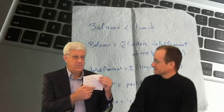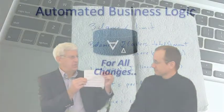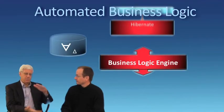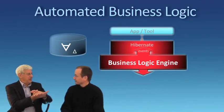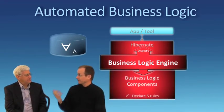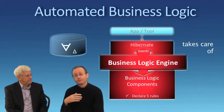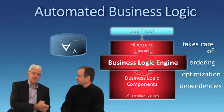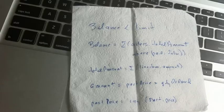That's exactly the same as our sample order entry application. Our cocktail napkin was nothing more than a series of expressions that should remain true for all transactions — adding orders, deleting orders, paying orders. What we provide is a business logic engine that plugs into Hibernate, responding to all the update events from it. You take these five expressions and feed them directly into the business logic engine, and it takes care of all the ordering, the optimization, the dependencies. This provides organization, agility, and transparency — five readable rules in a high-performance architecture with a very low barrier to entry.